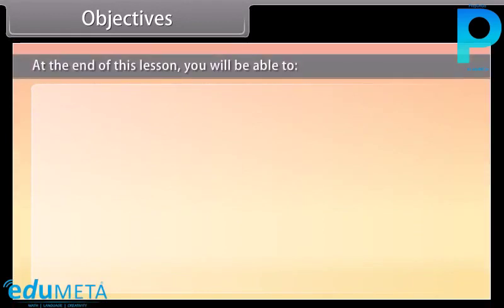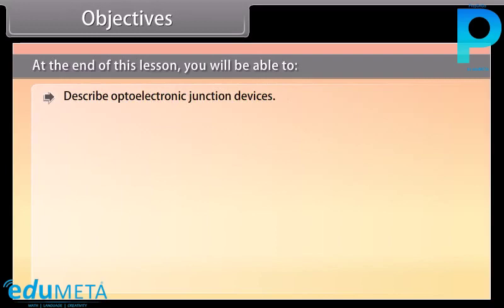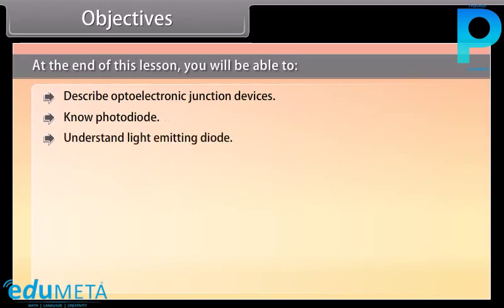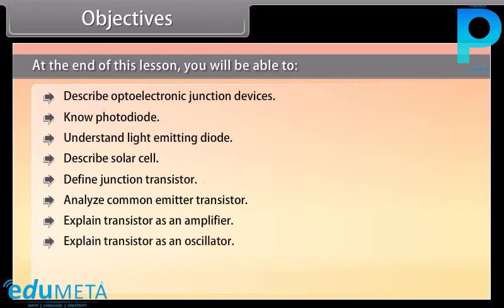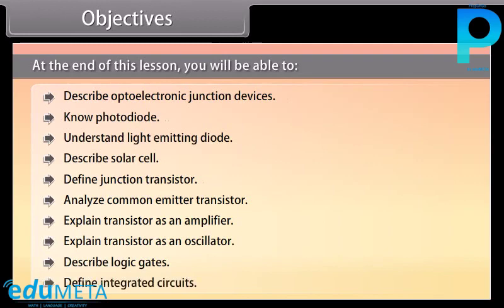At the end of this lesson, you will be able to: describe optoelectronic junction devices, know photodiode, understand light emitting diode, describe solar cell, define junction transistor, analyze common emitter transistor, explain transistor as an amplifier, explain transistor as an oscillator, describe logic gates, and define integrated circuits.